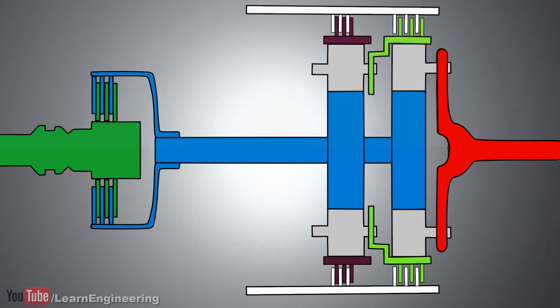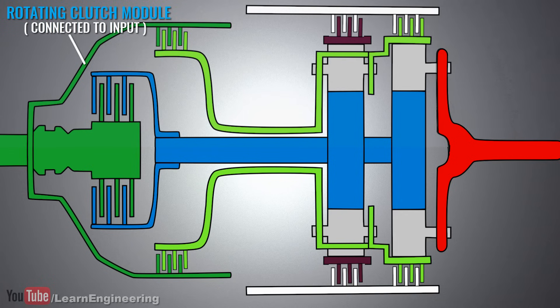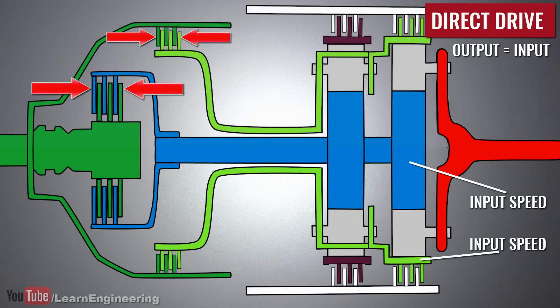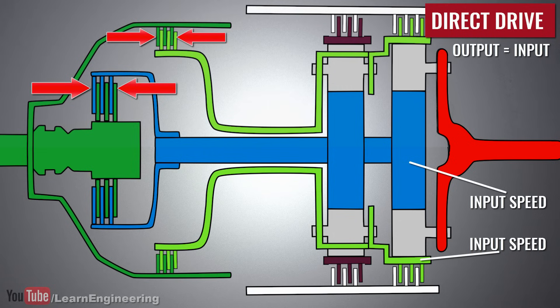To obtain a fourth gear or direct drive, a rotating clutch module is also used. We know that for a direct drive, both the sun and the ring gear should rotate at the input speed. If we press C2 and C1 together, this is what happens.